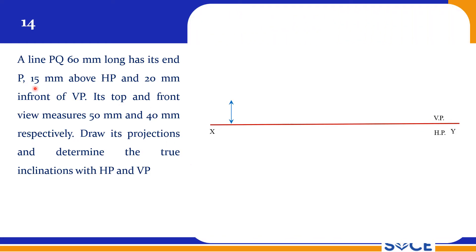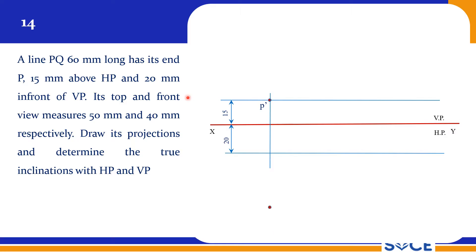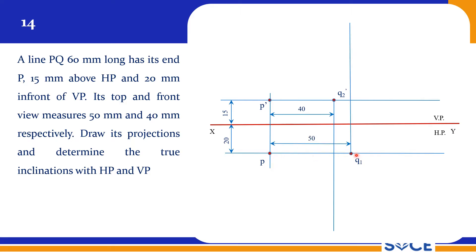One end is 15mm above HP and 20mm in front of VP, so we mark the first end without any problem — that is P dash and P — and this is the front view. The front view is 40mm and the top view is 50mm. So we get Q2 dash at 40mm, and Q1 at 50mm.